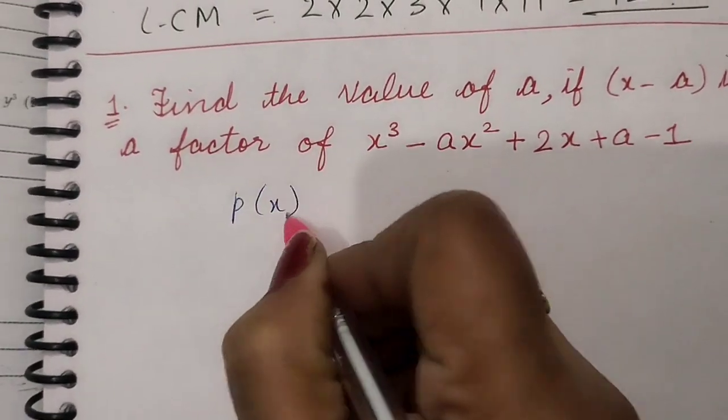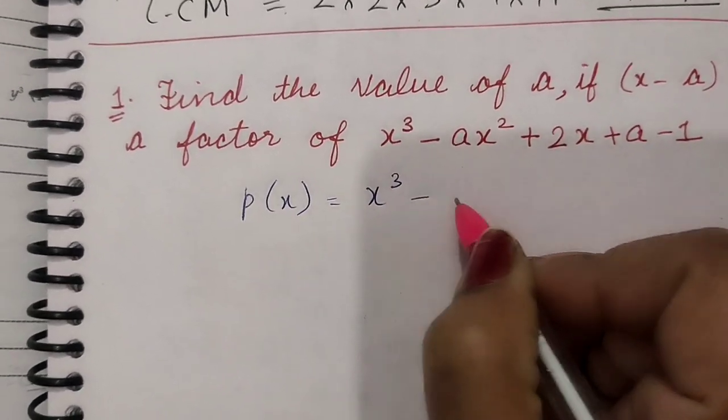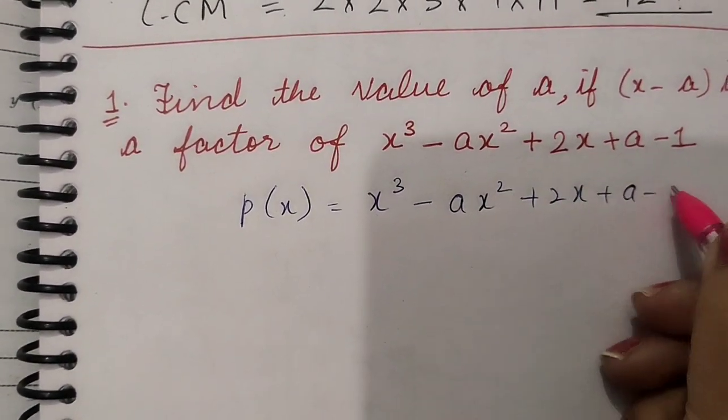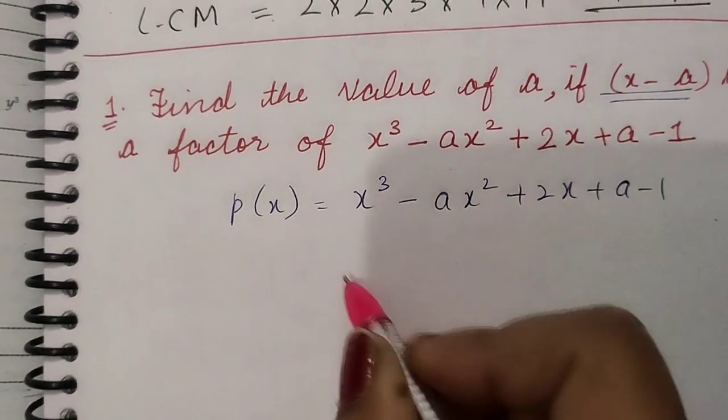Let us assume the polynomial to be p(x) = x³ - ax² + 2x + a - 1. x minus a is a factor of this.